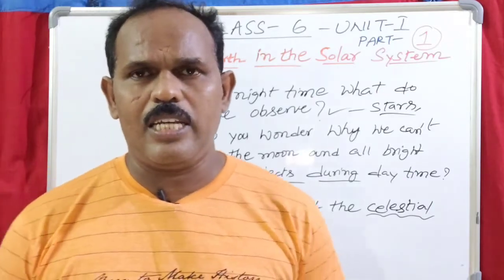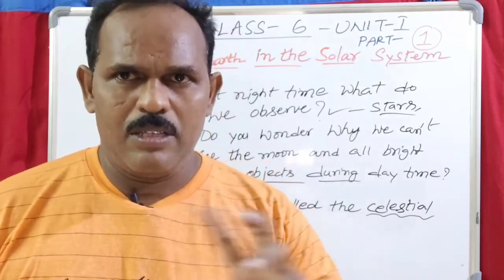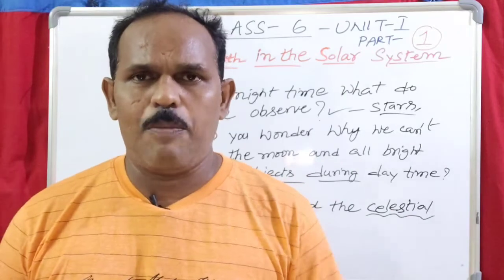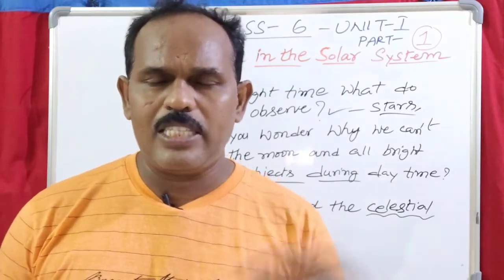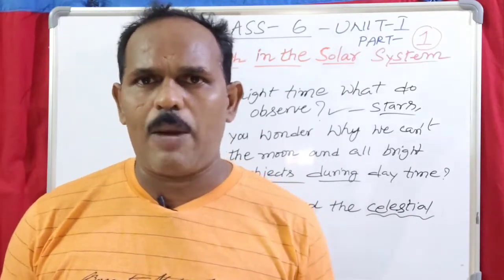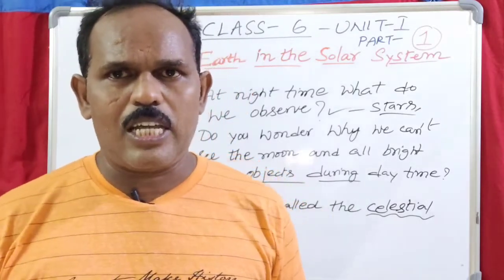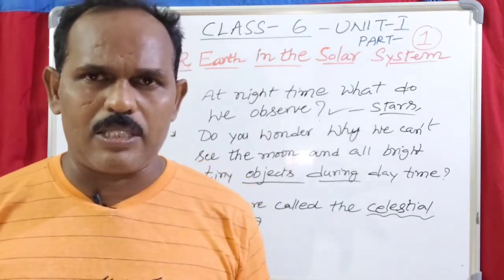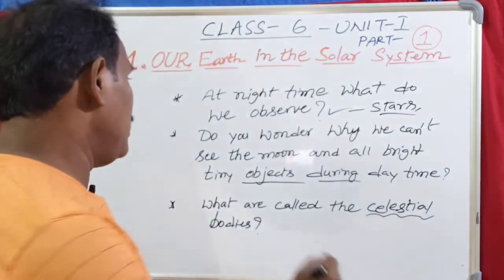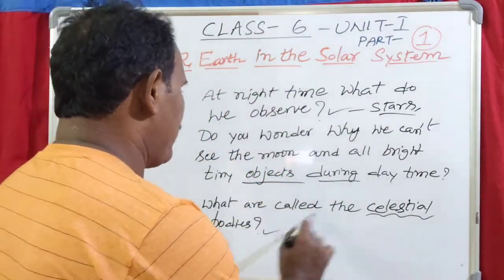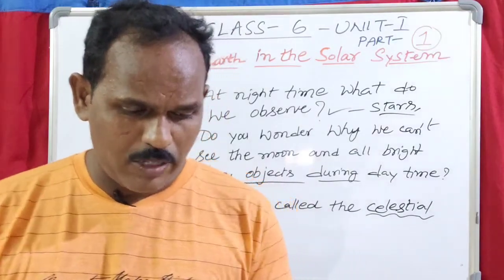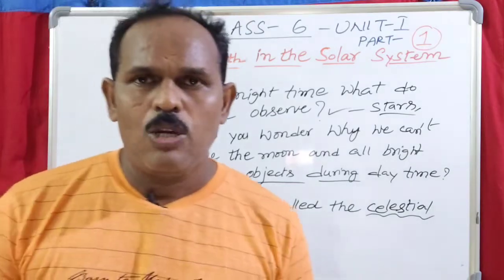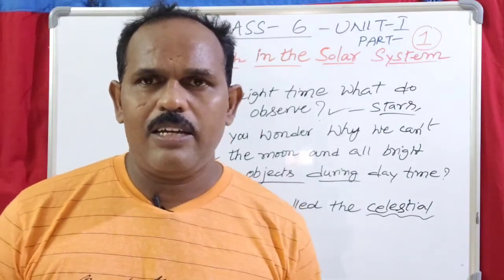They look so tiny because they are very far away from us. Because there is a solar system, that is why people have solar systems. Some celestial bodies don't have their own heat and light. Some celestial bodies are just like Earth.